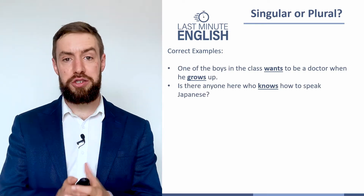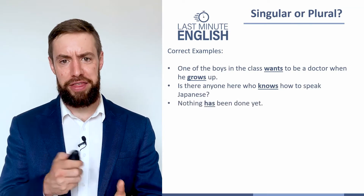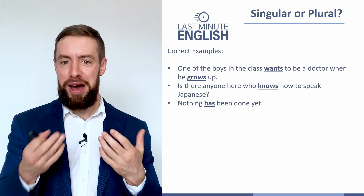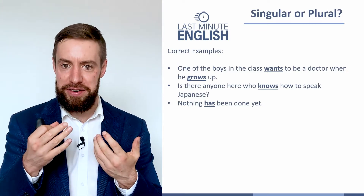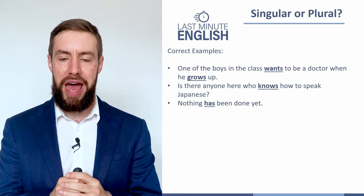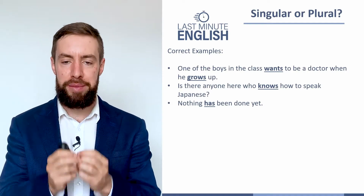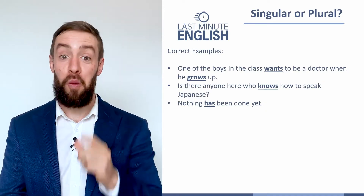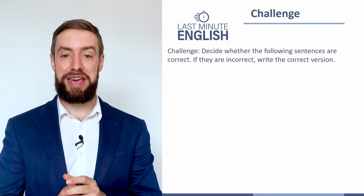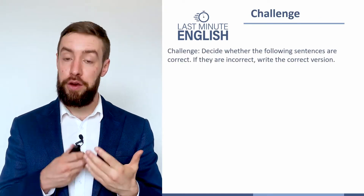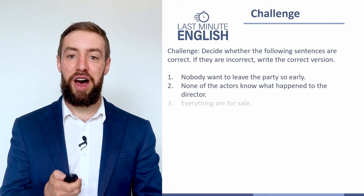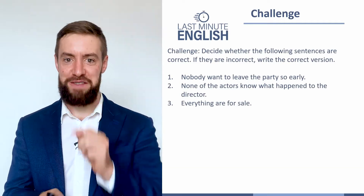The last example is a bit more logical: 'Nothing has been done yet.' You might think 'nothing' is not even singular — it's like zero — but we definitely don't use it as plural. In grammar, 'nothing' is also one thing. For your challenge in this video, I'm going to give you some sentences and you're going to decide if they're correct or not, and if not, write the correct version. Here are your three sentences — have a try now.